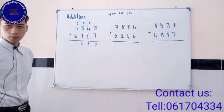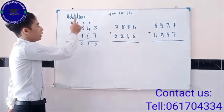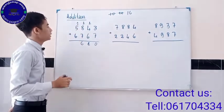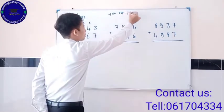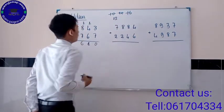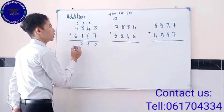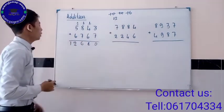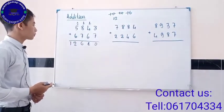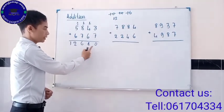Lastly, when we add 1 and 5 and 6, we get 12. So the answer is 12,610.